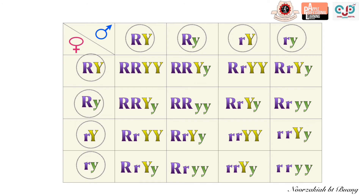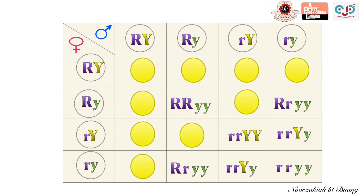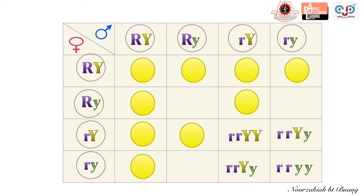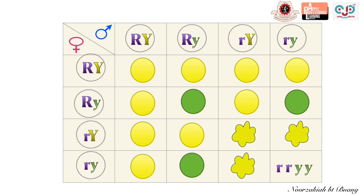If the genotype of the second filial has at least one dominant allele R and Y, the phenotype shown is round and yellow. If it contains at least one dominant allele for round and both recessive alleles for green, the phenotype is round and green. If it contains both recessive alleles for shape and at least one dominant allele for color, the phenotype is constricted and yellow. Finally, if it contains both recessive alleles for both shape and color, the phenotype shown is constricted and green.